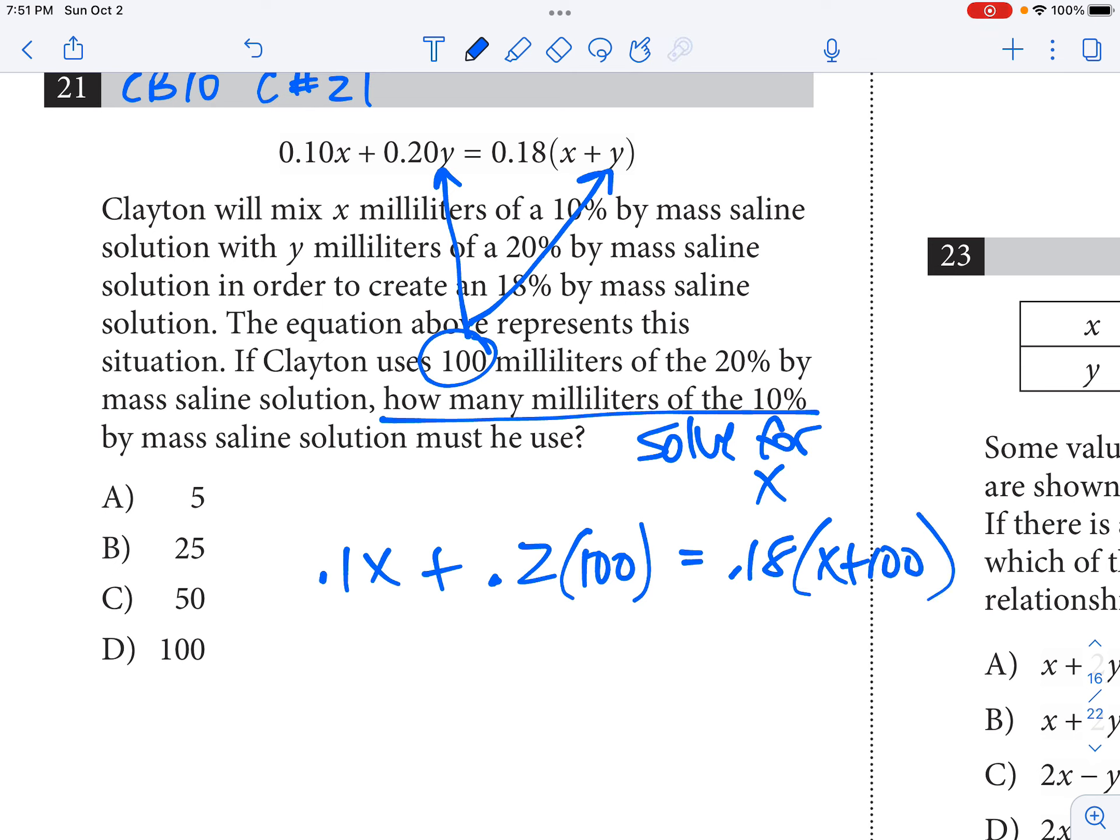So I'm going to kind of simplify here, and I'm going to distribute my 0.18. So I've got 0.1X plus 0.2 times 100. You just move the decimal place two times to the right, so we get 20. And I'm going to distribute my 0.18 to the X and to the 100. So I get 0.18X plus 18. Again, when you multiply any decimal by 100, you just move the decimal place two times to the right, so we get 18.